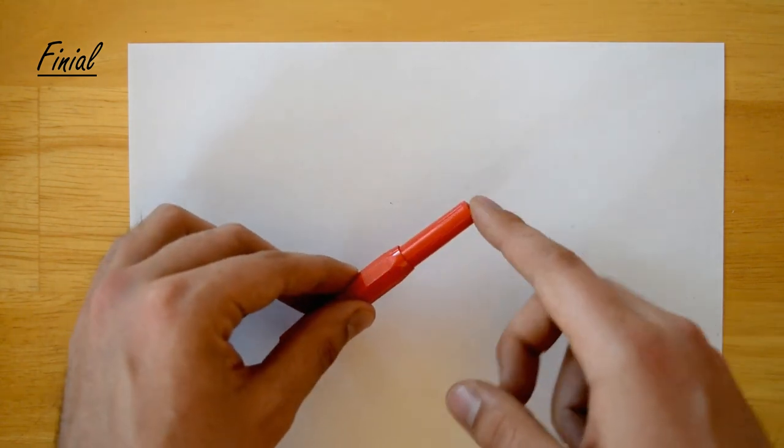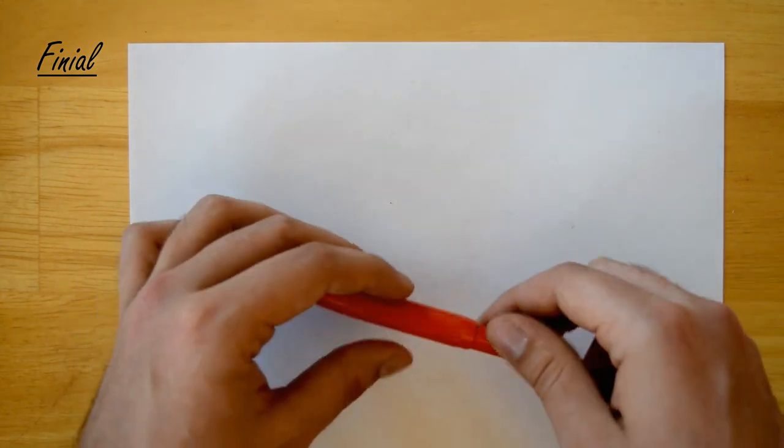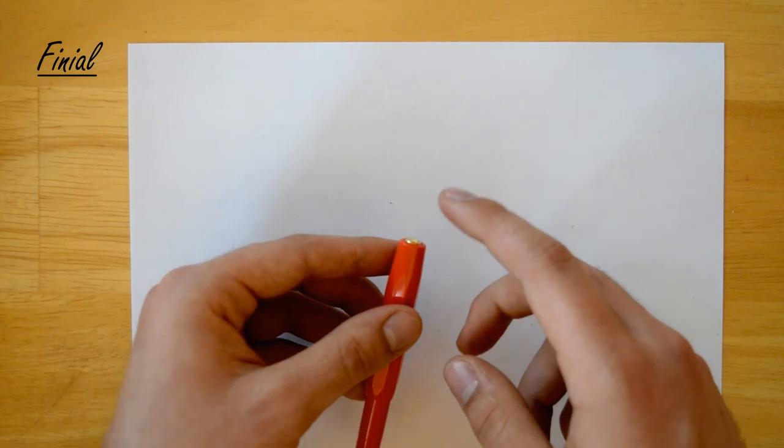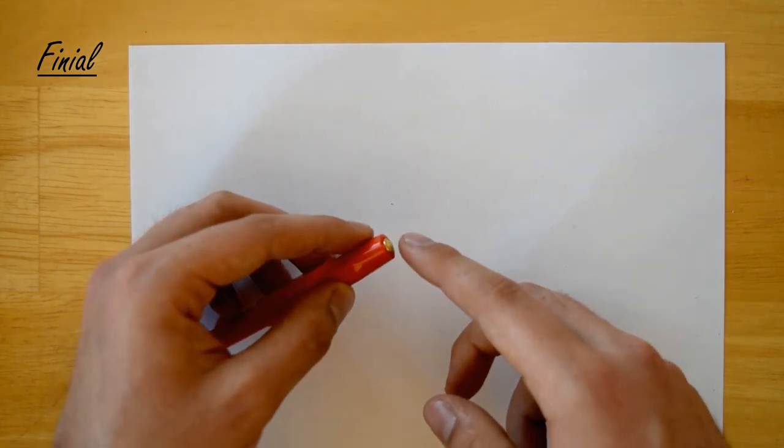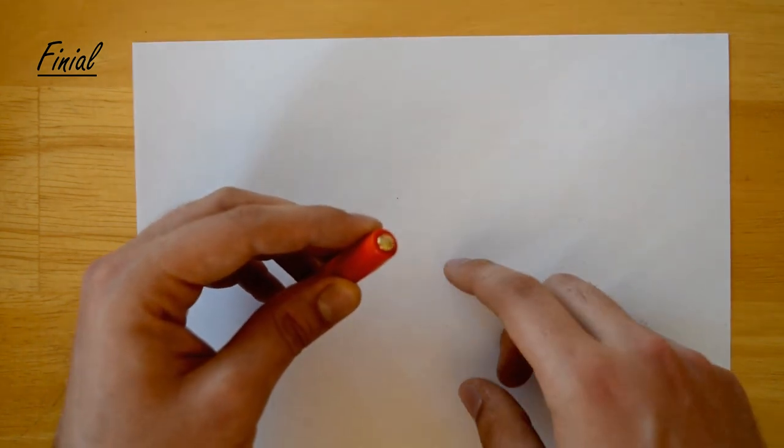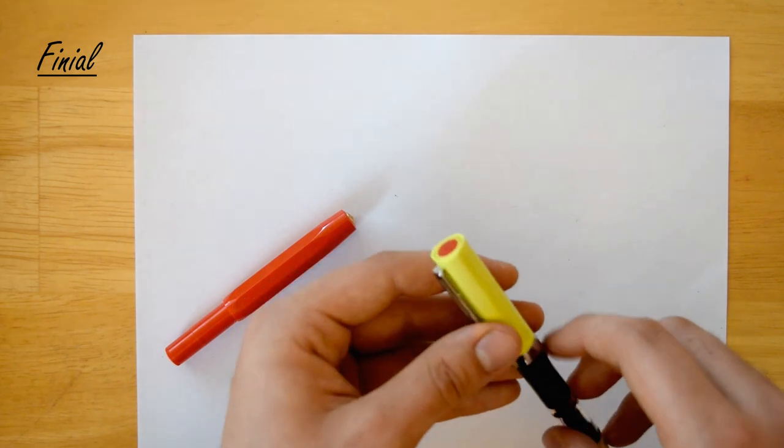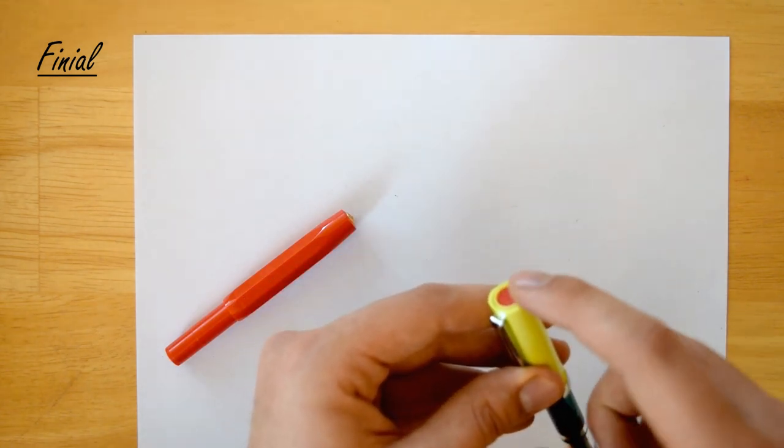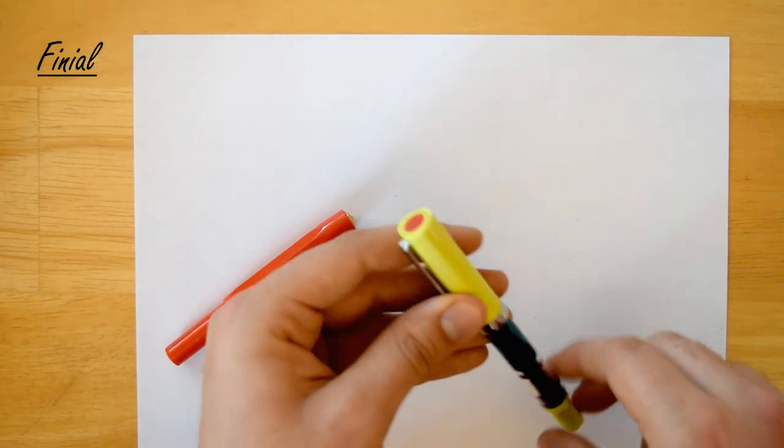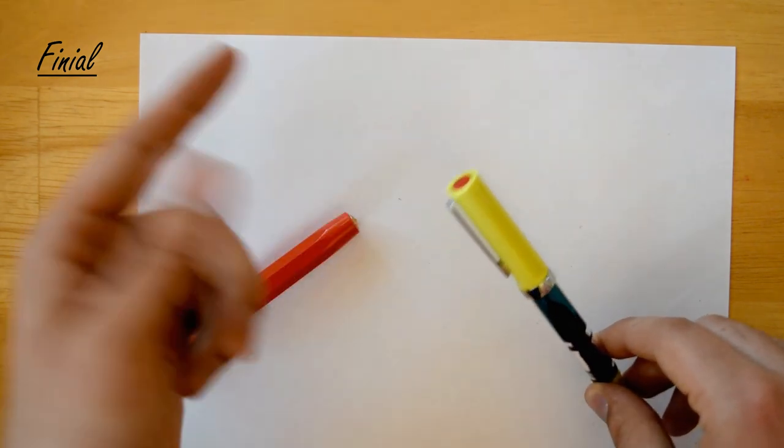The finial is actually the end of the pen, so both the end of the cap and the end of the barrel are called finials. Caps are often decorated, like on this Kaweco Sport it has the brand in a metal medallion that is inserted in the cap. I have a similar thing on the Twsbi Eco where again the brand is inserted on the top of the cap finial.